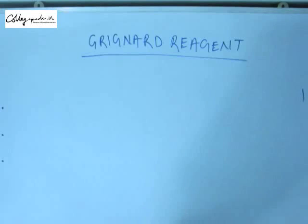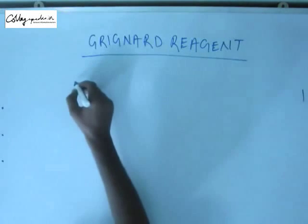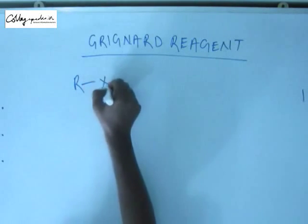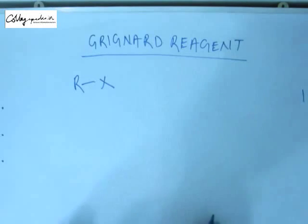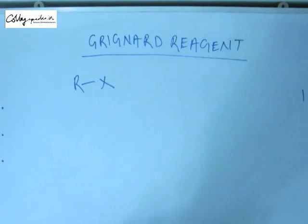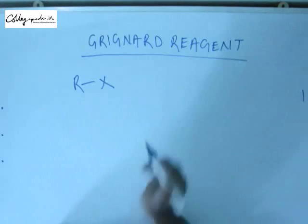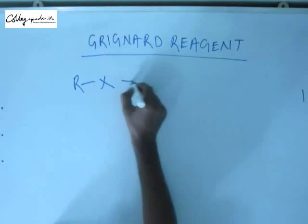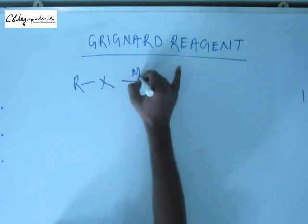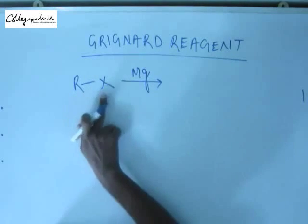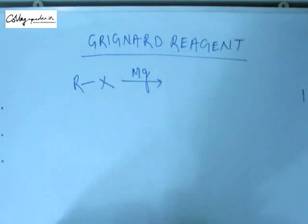Grignard reagent is prepared from alkyl halide, where X can be Cl, Br, and I. Generally, we don't take fluorine because the reaction with fluorine is violent and fluorine forms a strong bond with R. So it is difficult for magnesium to insert between R and X as it does to prepare Grignard reagent.